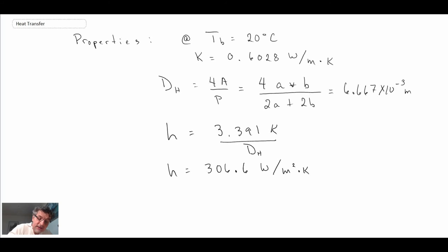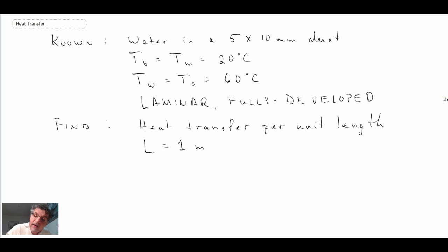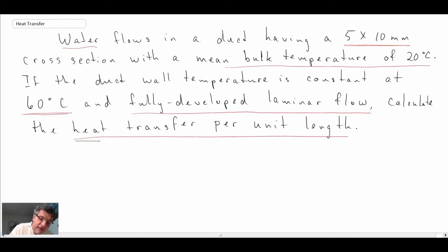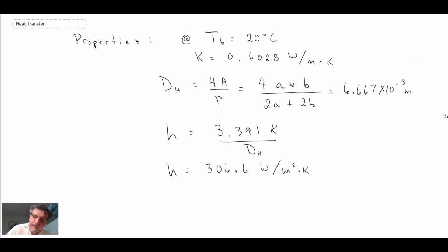But that is the value that we get for h. And now looking at the problem statement, what we were looking for: we want to find the heat transfer per unit length. So heat transfer per unit length, that is going to be watts per meter. Looking at it in terms of things, it's going to be q prime. So coming back here...